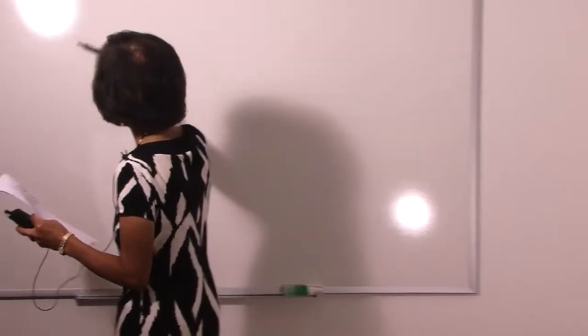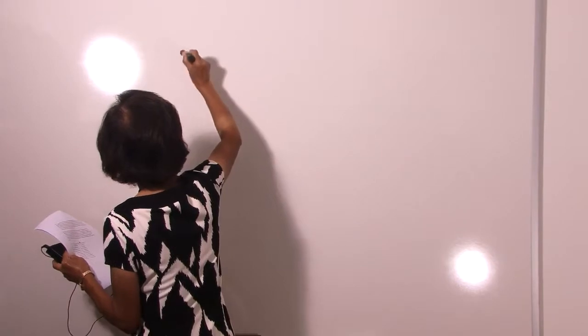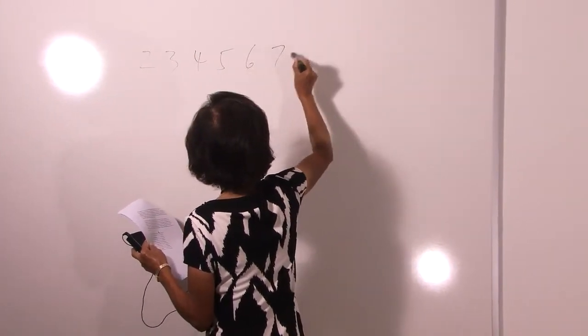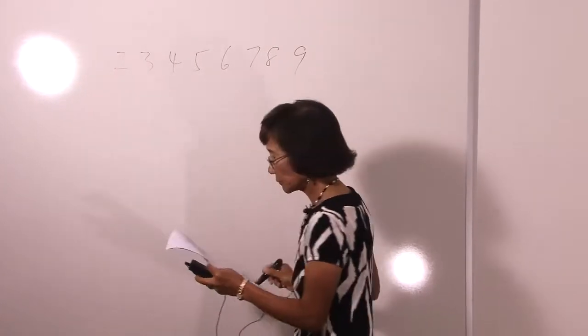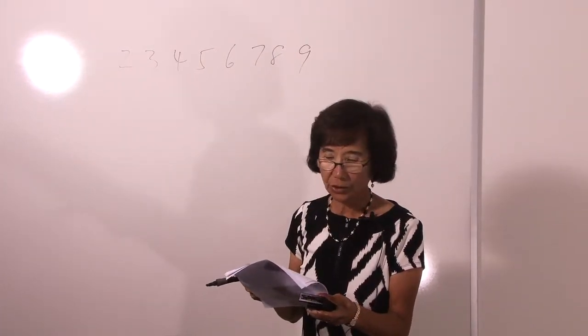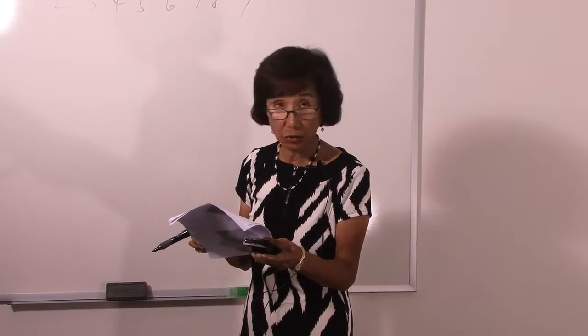The numbers we use today — 0, 1, 2, 3, 4, 5, 6, 7, 8, 9 — are Hindu-Arabic in origin. The advantages of using Arabic numbers are so manifest that they have replaced all other number systems throughout the world, including China.